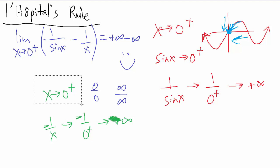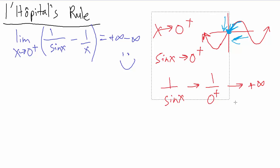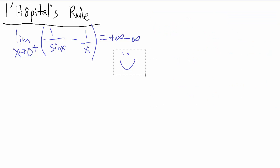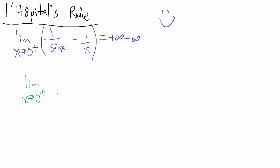We have to do some algebraic manipulations to get something that, when evaluated by direct substitution, gives us zero over zero or infinity over infinity. So let's go ahead and do that. We want to get a common denominator. Take one over sine of x and multiply by x over x. Take one over x and multiply by sine of x over sine of x.